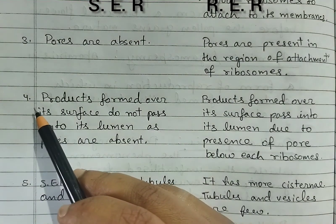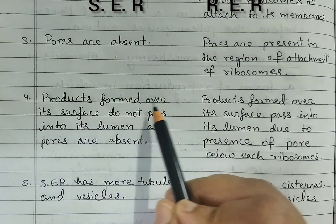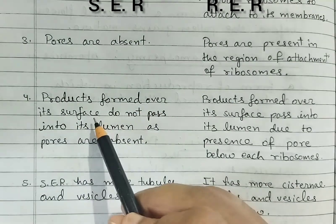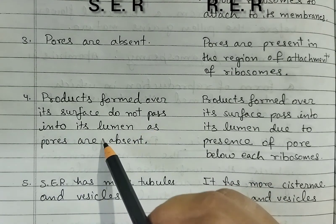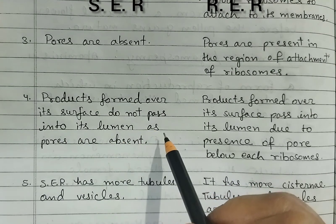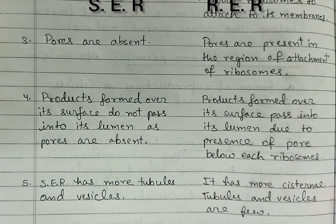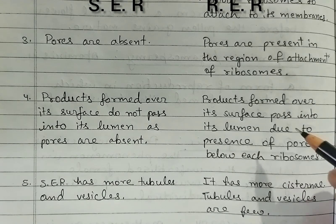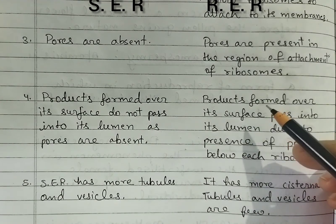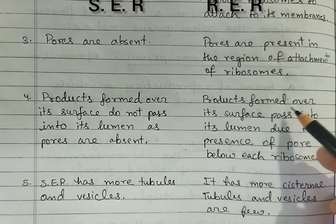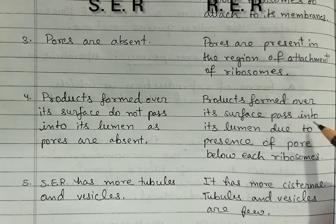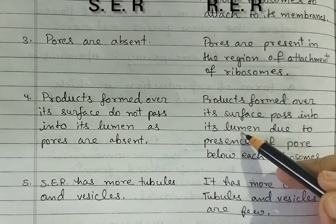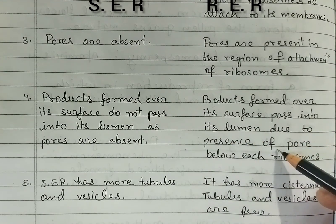Fourth difference — in smooth, products formed over its surface do not pass into its lumen as pores are absent. In rough, products formed over its surface do pass into its lumen due to the presence of pores below each ribosome.